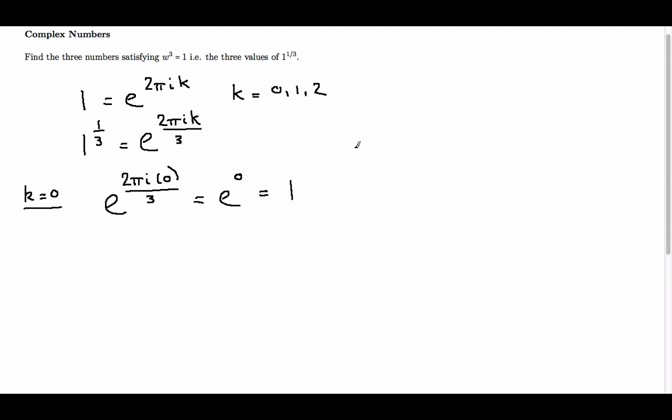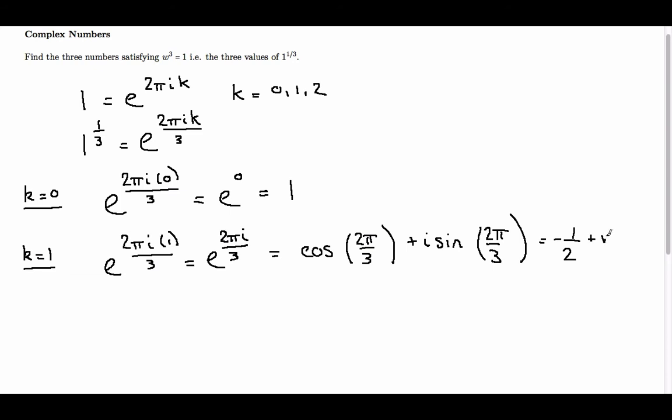What you may not have been expecting, though, were the two other solutions. When k is equal to 1, we find that we have e to the 2 pi i times 1 over 3, which is e to the 2 pi i over 3, which we can write as cos 2 pi over 3 plus i sin 2 pi over 3. Now, evaluating these, we get minus 1 half plus root 3 over 2 i. So we have another solution to 1 to the power of 1 third.